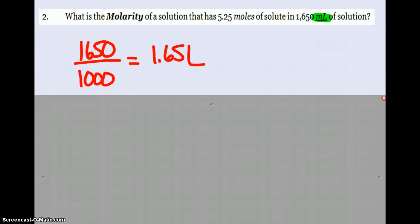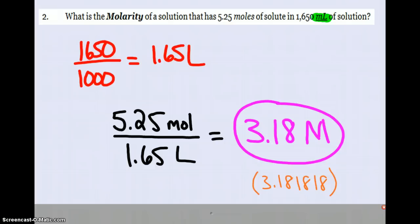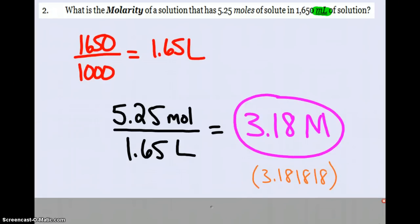Now that we know we've got 1.65 liters and 5.25 moles, we can put that into our calculator. It'll spit out 3.181818 ad infinitum. Using our three sig figs again found in the problem, 3.18 capital M, the label for molarity.